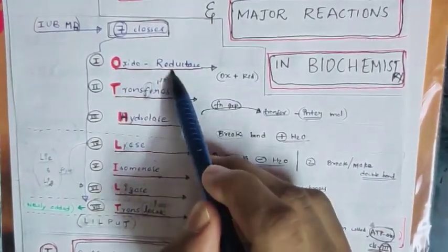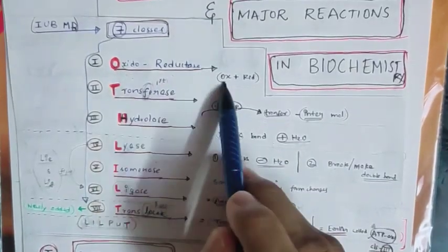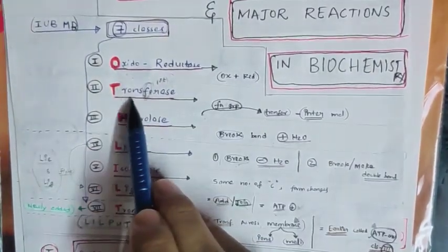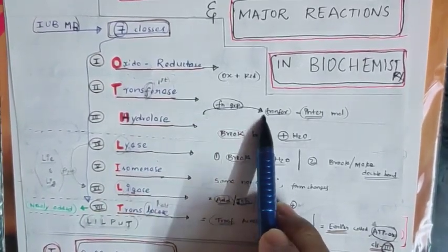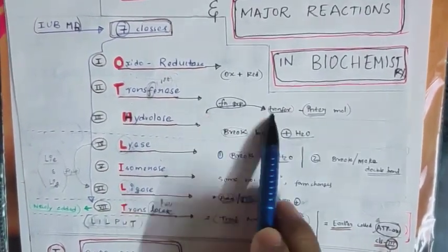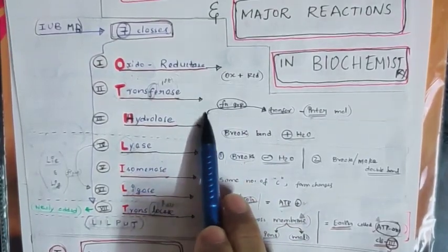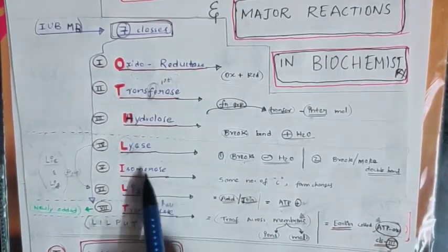Coming to the first class: Oxidoreductase - oxidation plus reduction. Transferase transfers functional group from one substrate to another substrate - intermolecular, not intramolecular. Intramolecular comes under Isomerase.